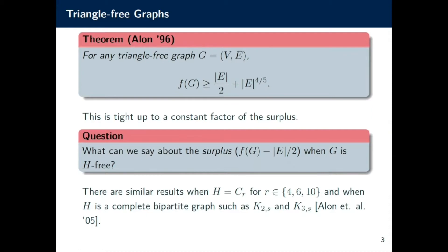Alon also showed more recently, along with some co-authors, that when H equals C_r for r equals 4, 6, or 10, or when we consider the bipartite complete graph K_{2,s} or K_{3,s} with one side being of size 2 or 3, you can also get some non-trivial improvement over |E|/2.